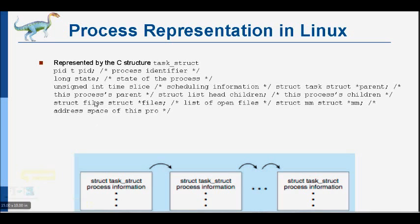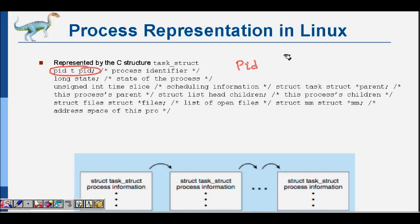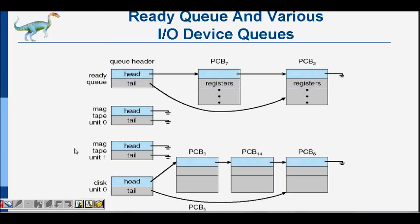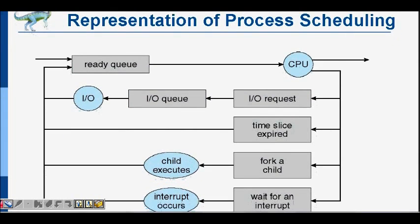To represent a process in a data structure, we need several fields. You need an identifier — the process identifier (PID) — which is unique for each process, as seen in Linux and Windows. You need the state: is the process ready, or waiting for I/O? You have the time slice and scheduling information. You also store the parent process if it is a child process, and which I/O devices this process is using.